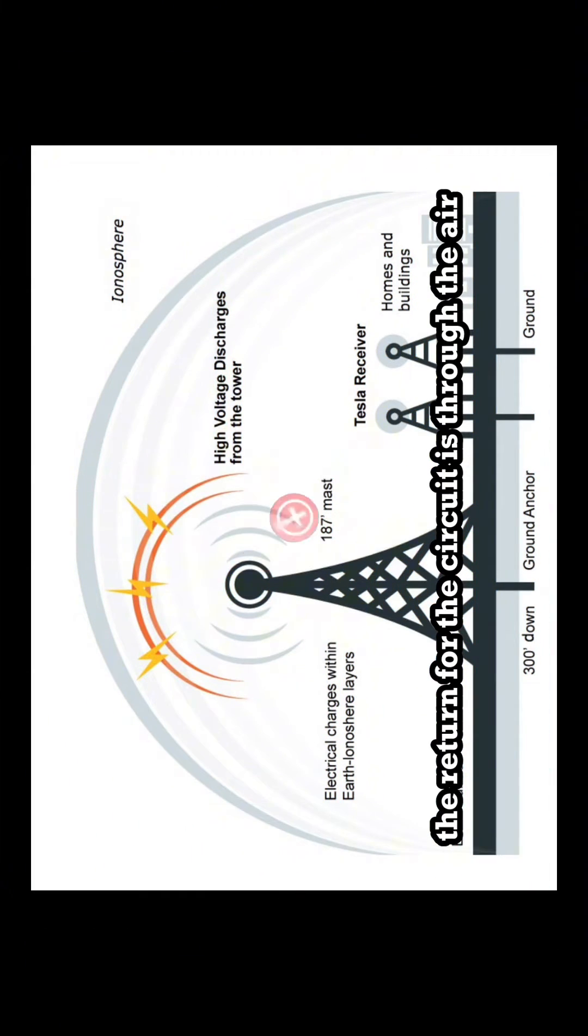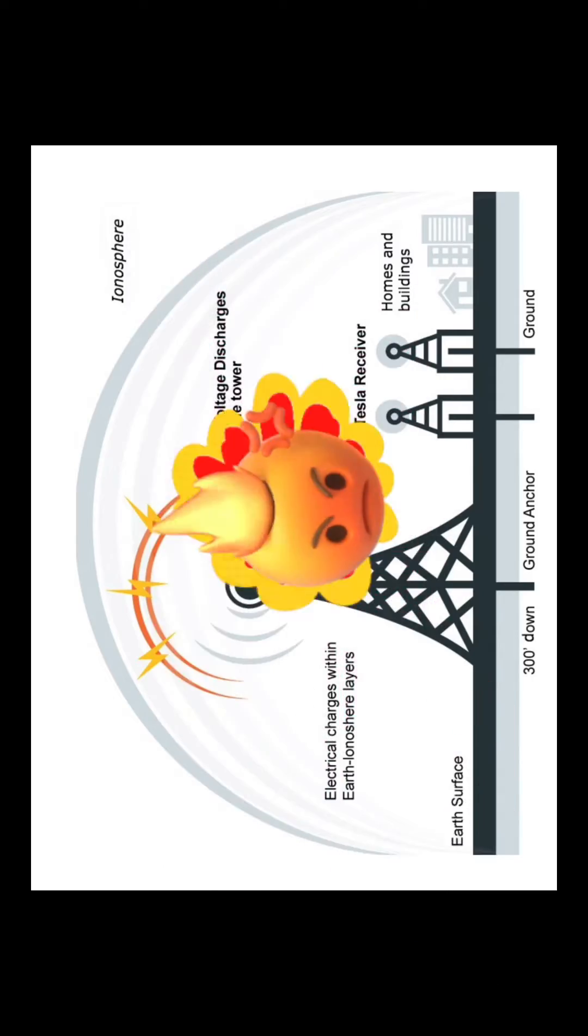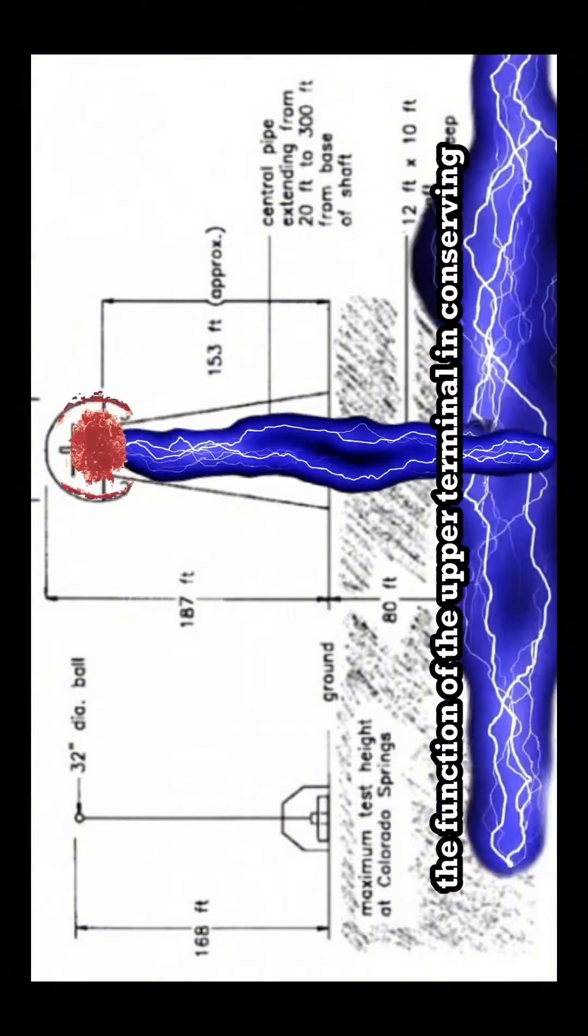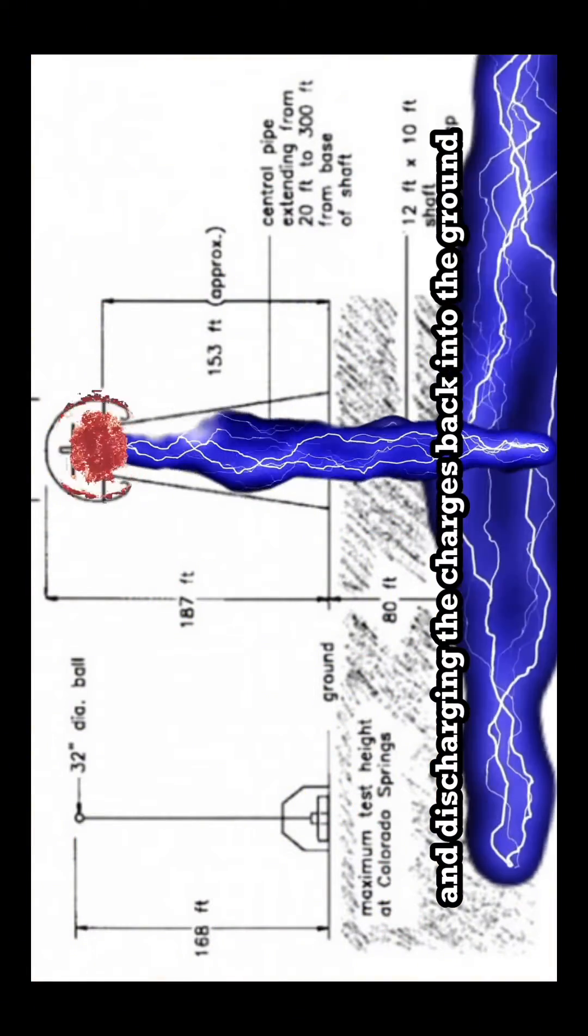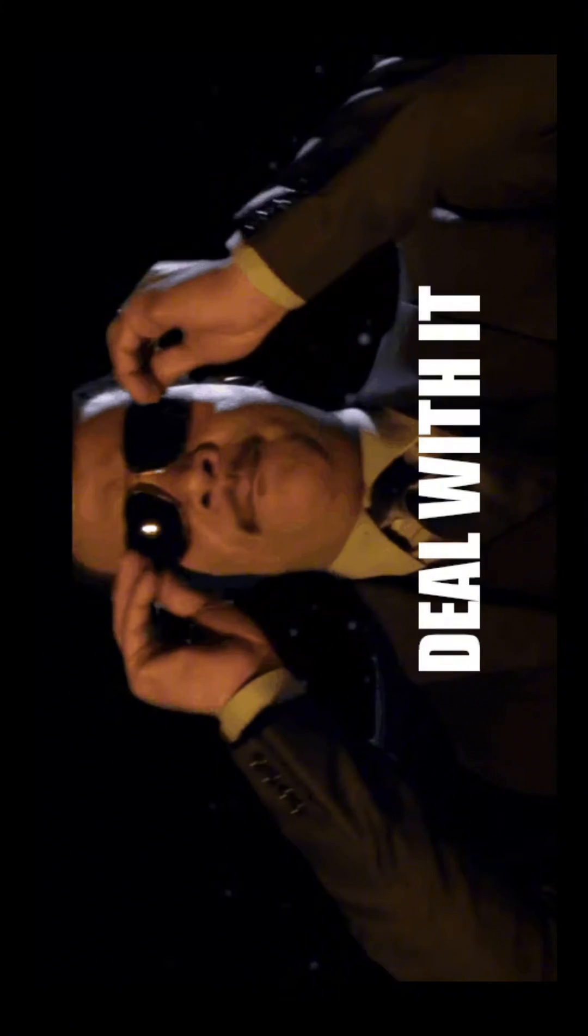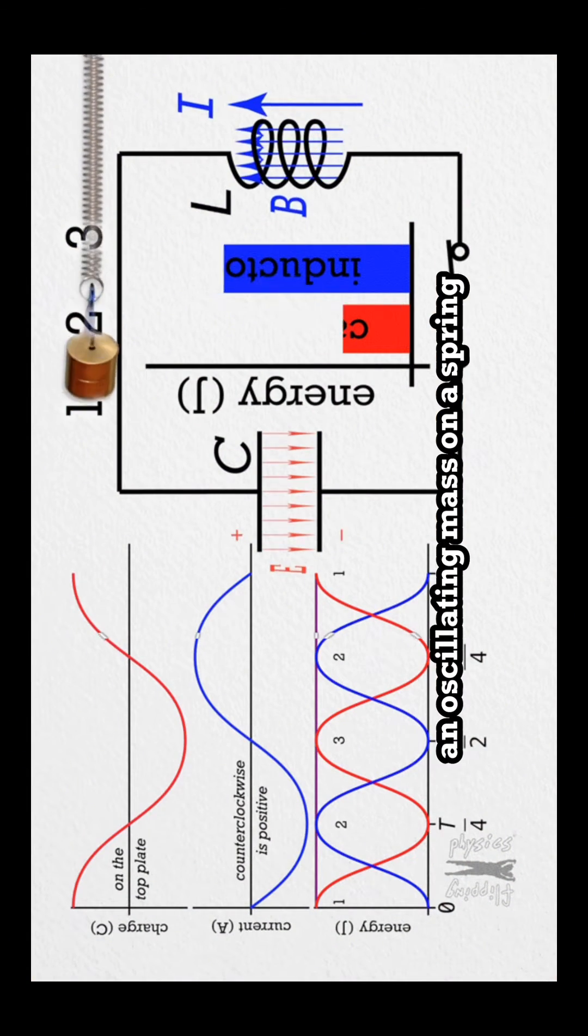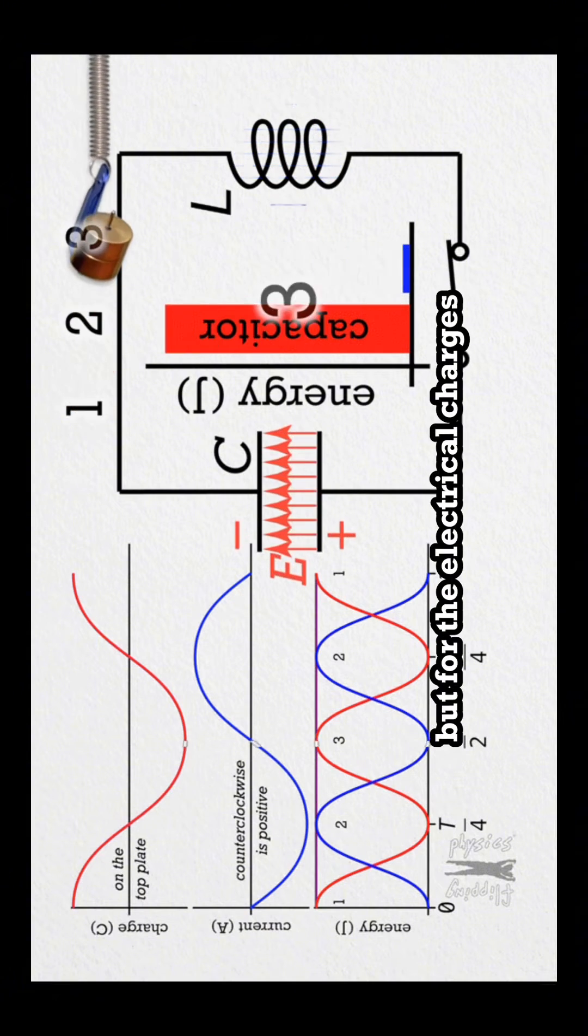This also clears a common misconception that the return for the circuit is through the air. The function of the upper terminal in conserving and discharging the charges back into the ground effectively dispels this notion. This action can be seen as being analogous to an oscillating mass on a spring, but for the electrical charges.